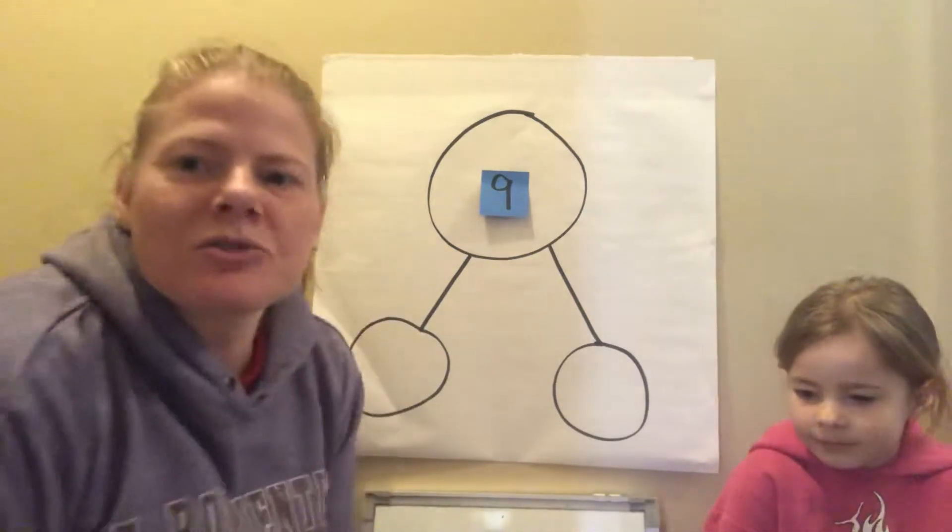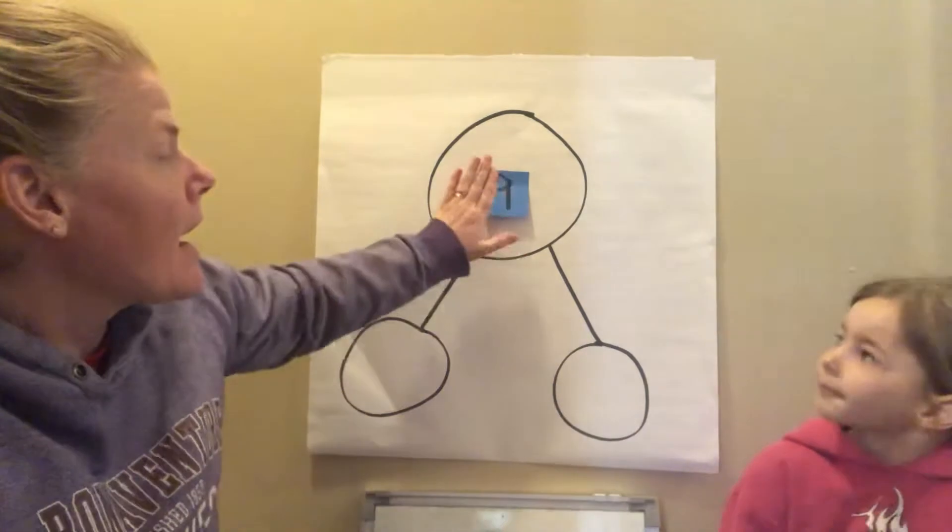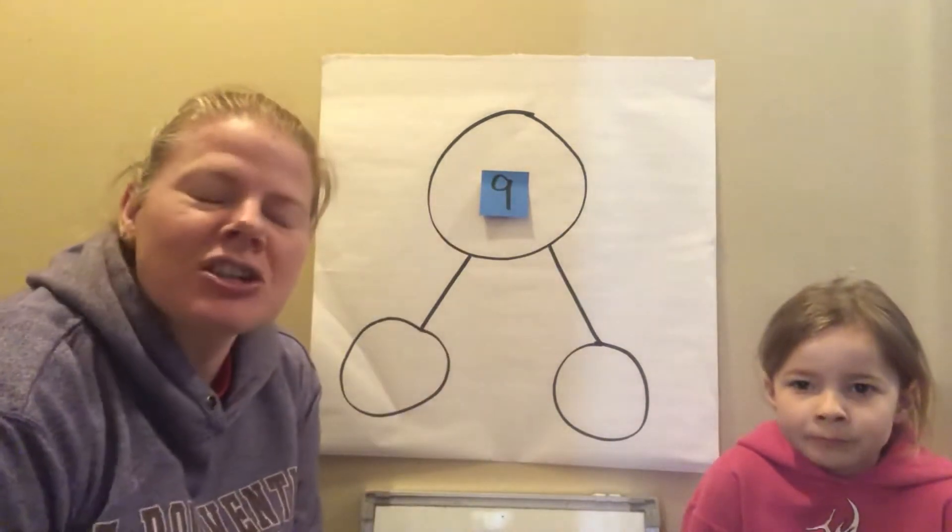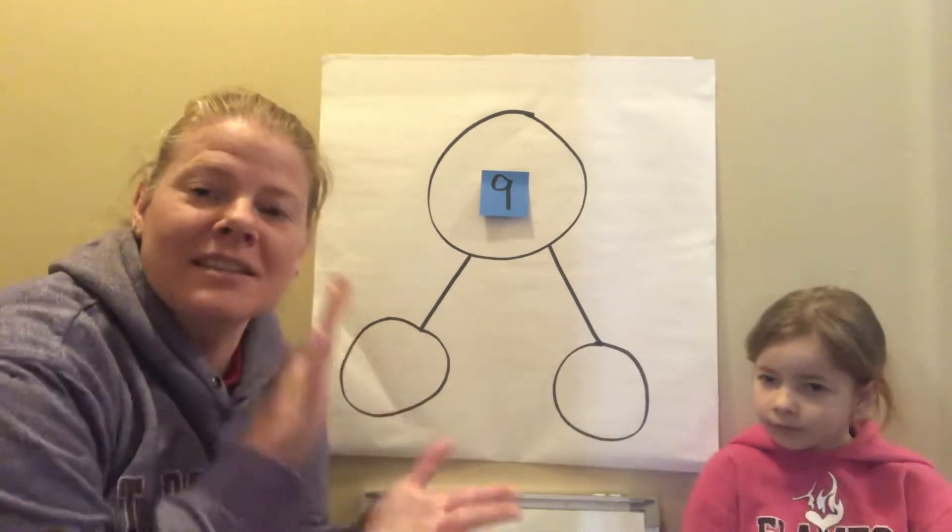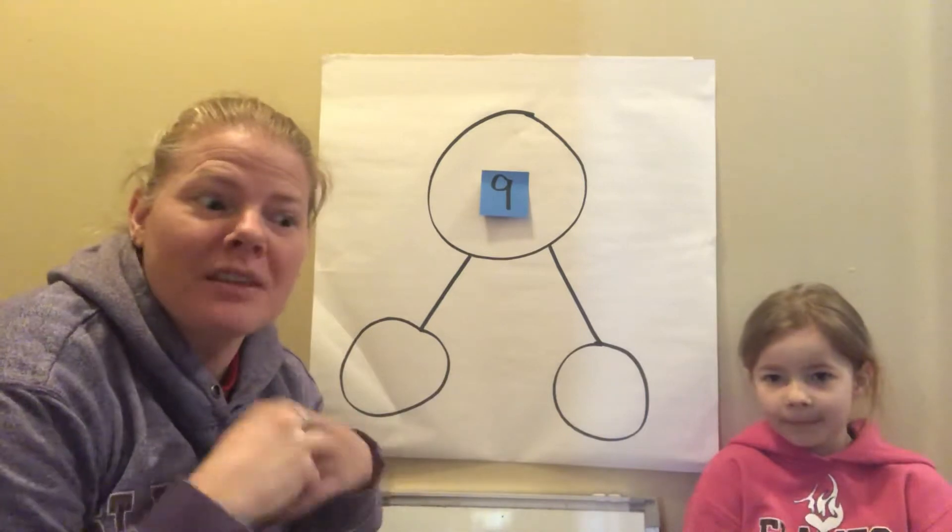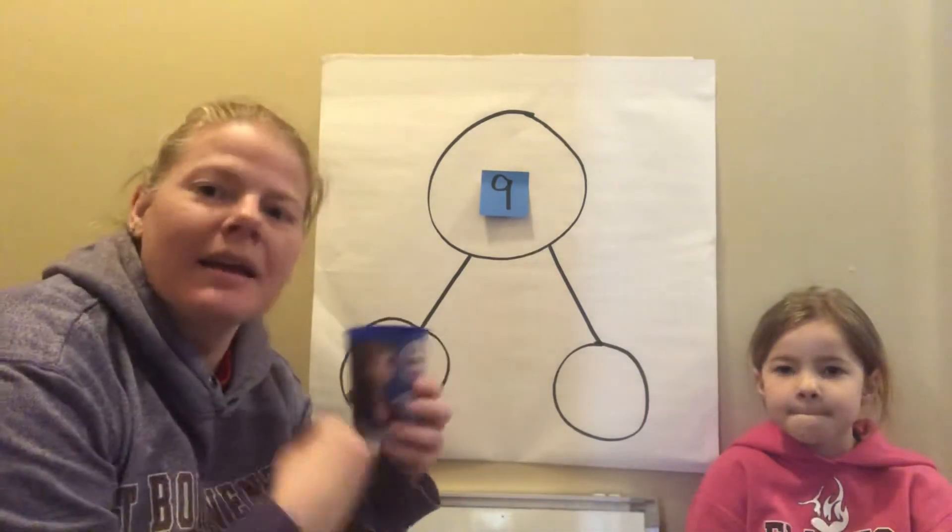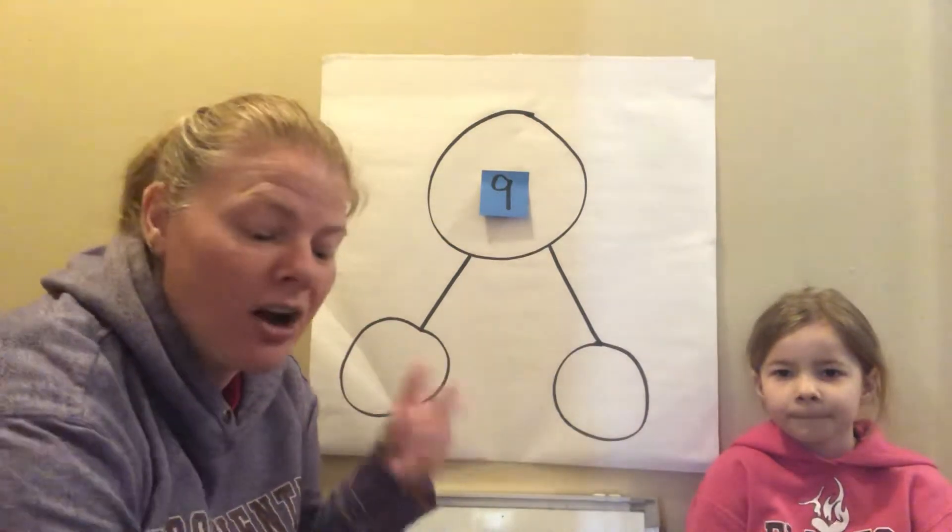All right, so yesterday you decomposed the number nine with Mrs. Bates. I have a number nine up here in my number bond, and at the end of her video she showed you how to play a game called Guess the Covered Number. They had a little cup on there and they took some away and then you had to figure out what number was missing. How many did you need under that cup?